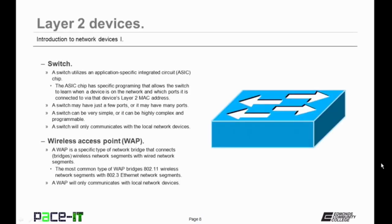The first Layer 2 device we're going to talk about is the switch. A switch utilizes an application-specific integrated circuit chip — an ASIC chip. The ASIC chip has specific programming that allows the switch to learn when a device is on the network and which ports it is connected to via that device's Layer 2 MAC address. That's what makes a switch a Layer 2 device. A switch may have just a few ports, or it may have many ports.